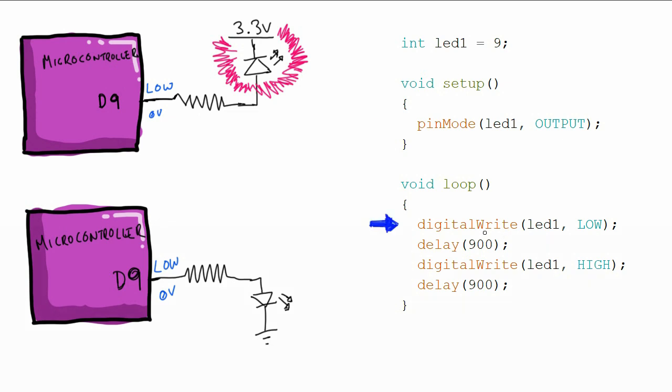Next, we move to this digitalWrite LED1 low. Now, they're already low, so it doesn't do anything. So, we wait 900 milliseconds, and then what we do is we turn this pin high.